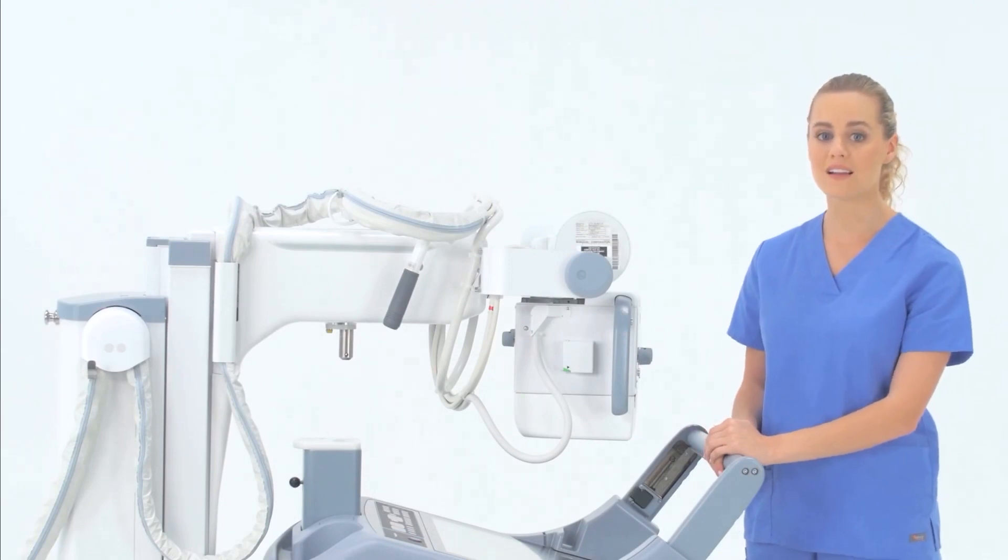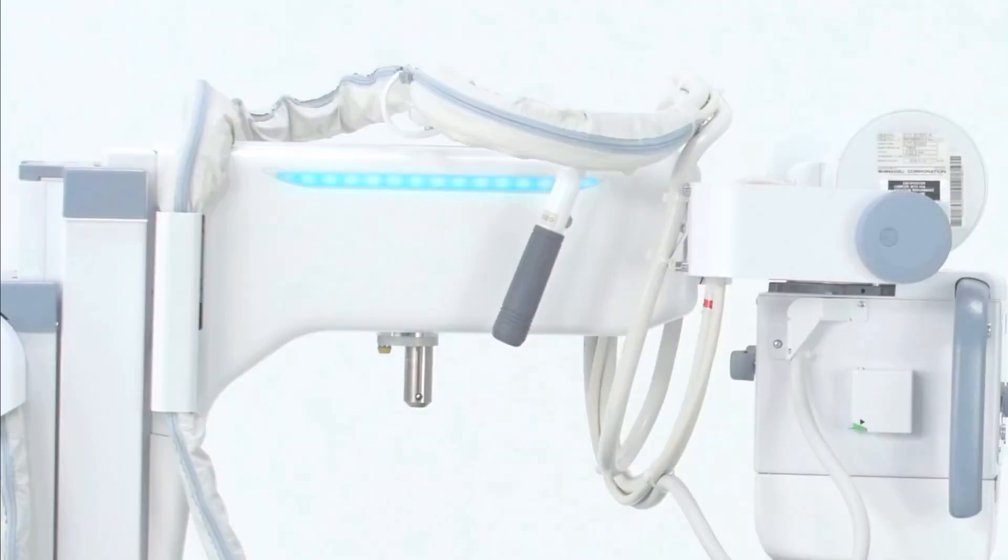When the collimator head is unlocked, the light on the side of the column will illuminate. The light will blink when the unit is charging.